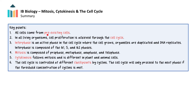The following were covered in this video: All cells come from pre-existing cells. In all living organisms, cell proliferation is achieved through the cell cycle. Interphase is an active phase where the cell grows, organelles are duplicated, and DNA replicates. Interphase is composed of G1, S, and G2 phases. Mitosis is composed of prophase, metaphase, anaphase, and telophase. Cytokinesis follows mitosis and is different in plant and animal cells. The cell cycle is controlled at different checkpoints by cyclins, and will only proceed to the next phase if the threshold concentration of cyclins is met.